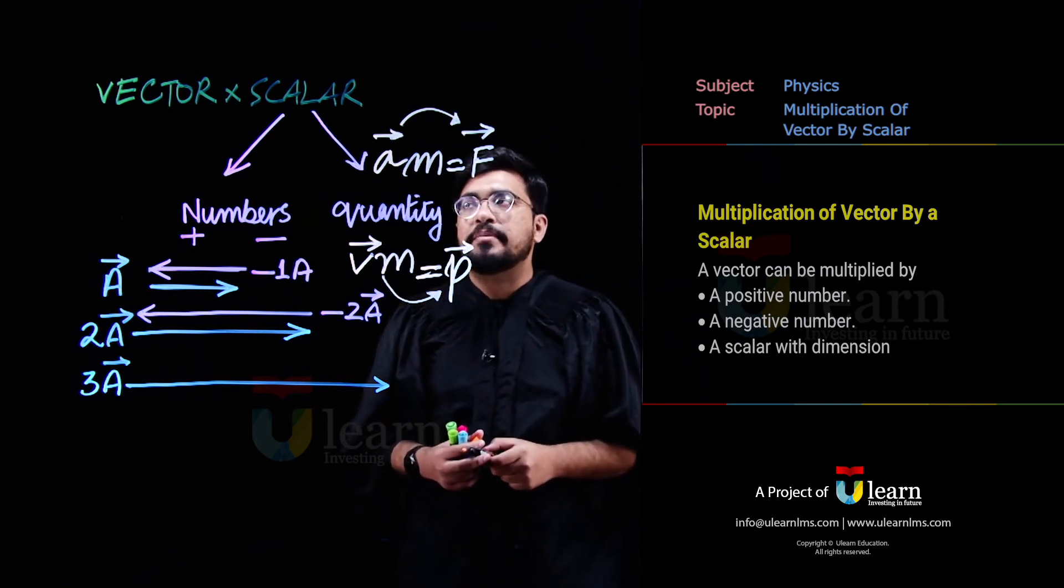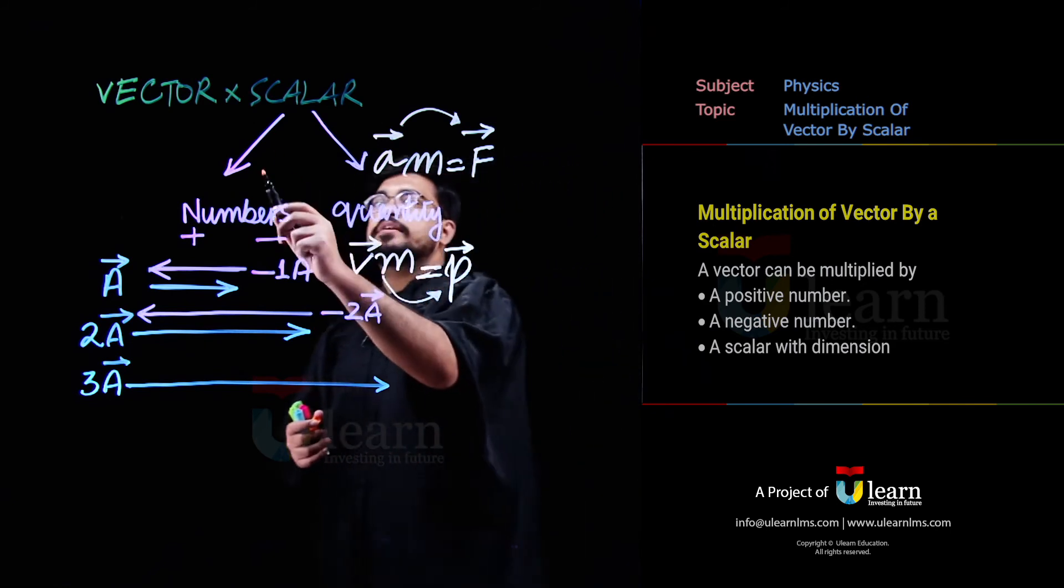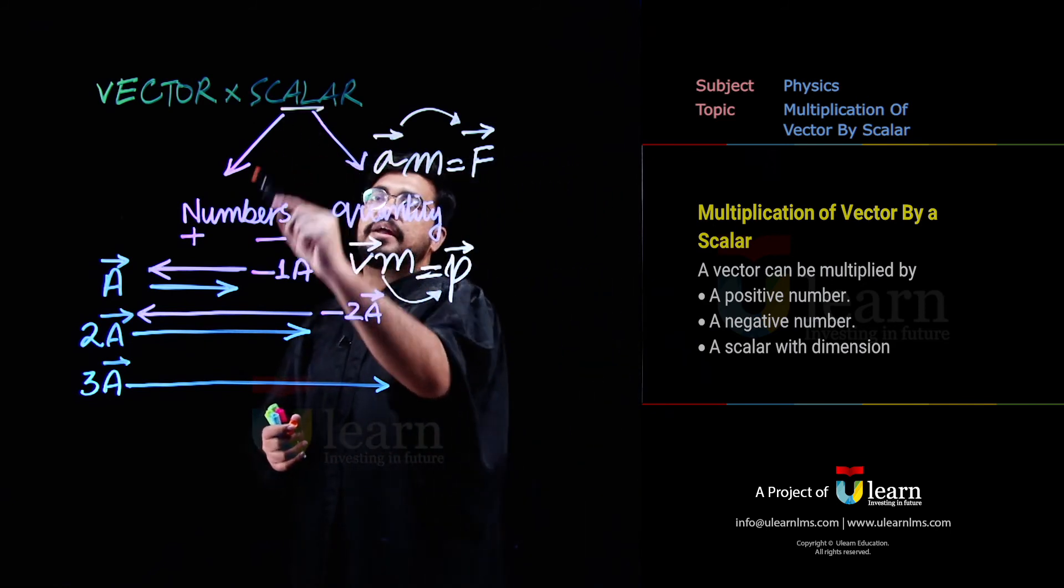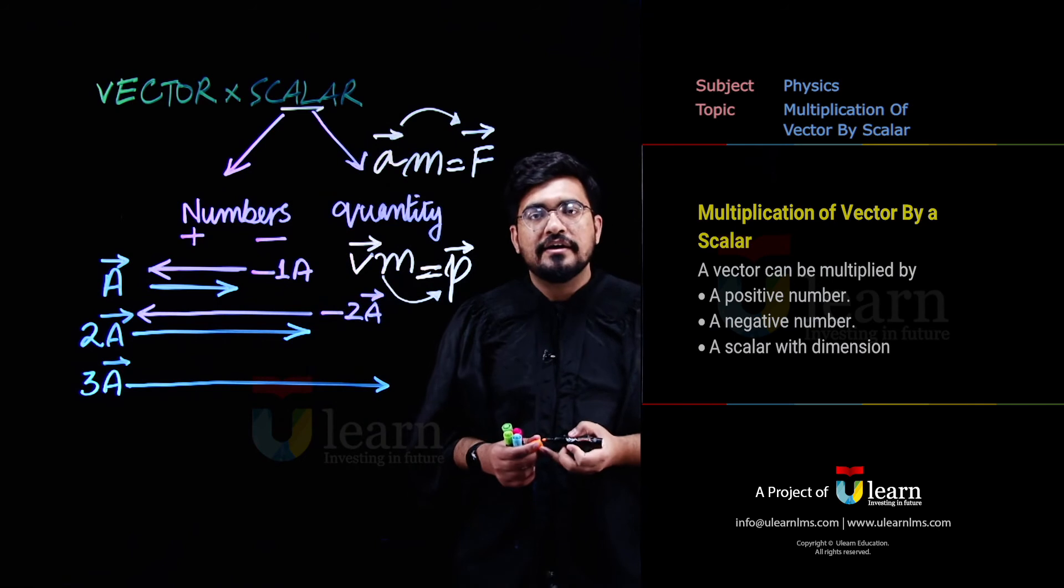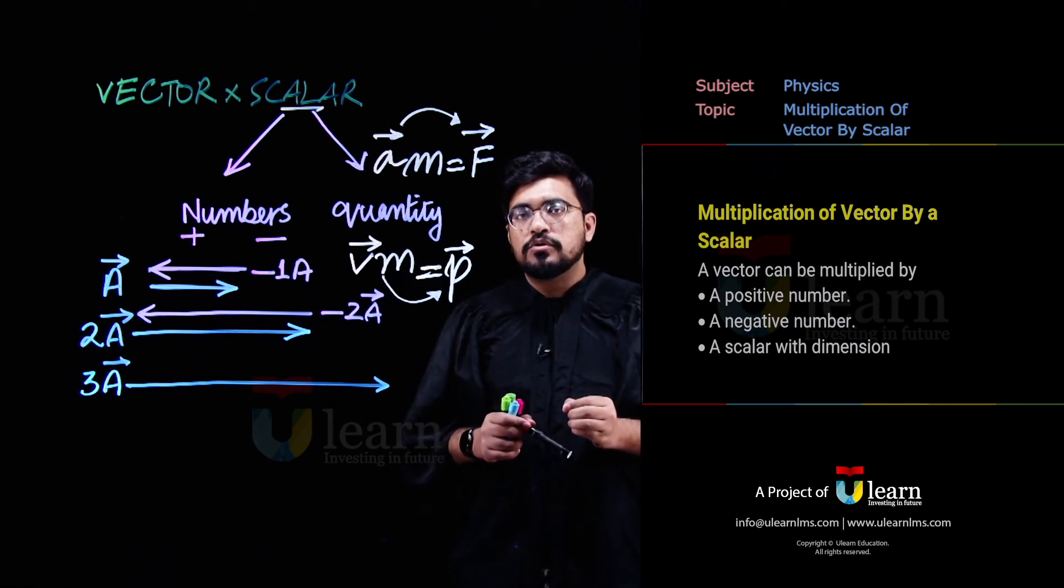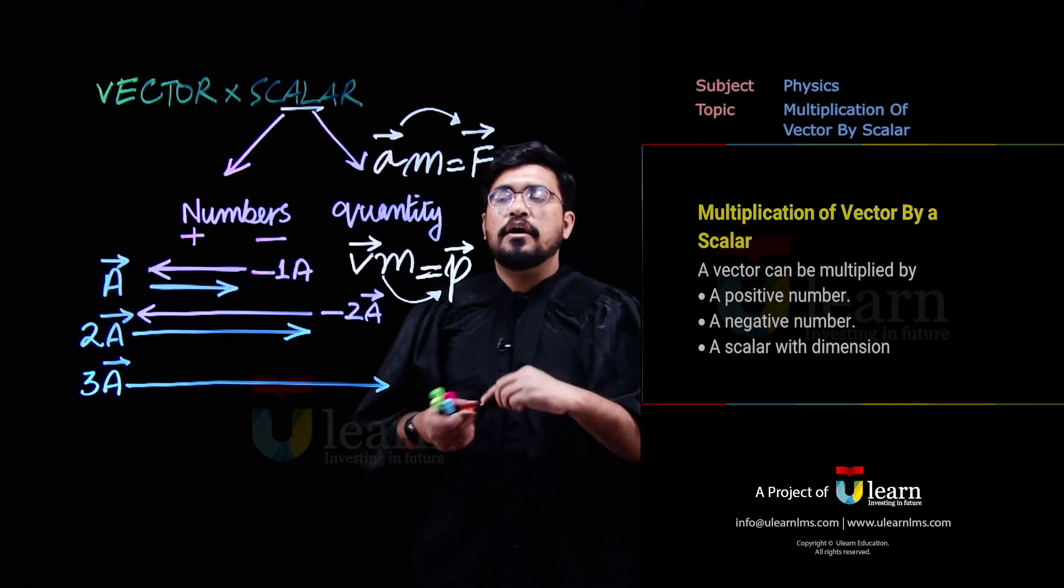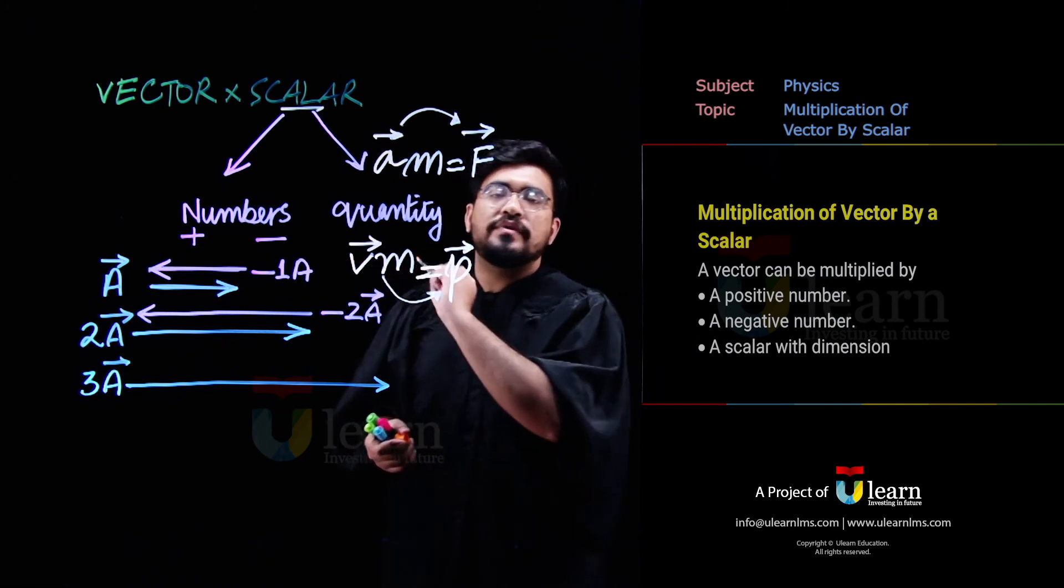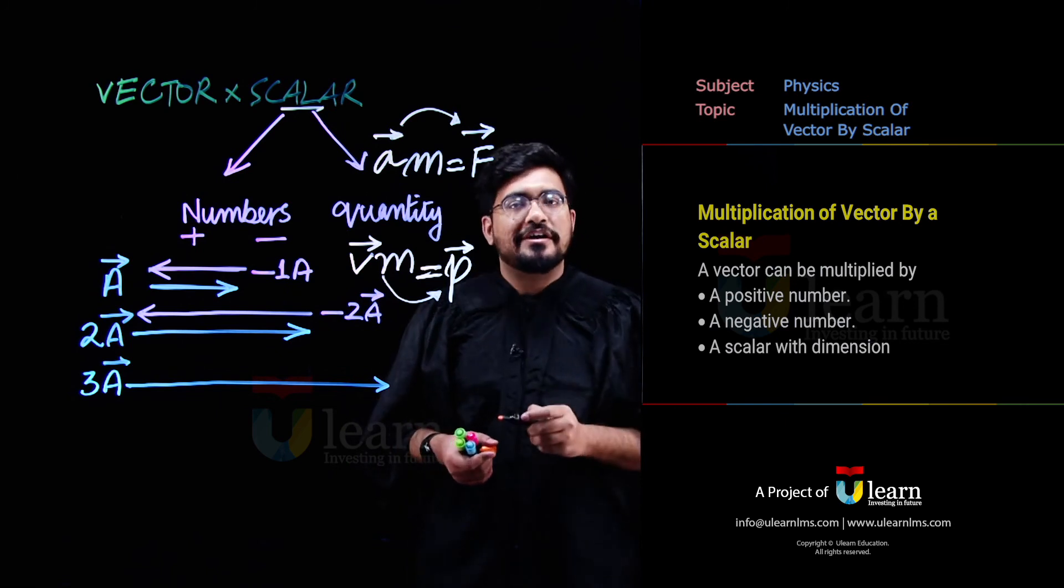Toh yahaan se, phir agar dusri baat karein, ki jab aap ek vector ko ek scalar quantity se multiply kar rahe ho, toh hume pata chalta hai, ki woh quantity agar positive hai, direction same rahegi, momentum ki direction wo hi hai, jo velocity ki direction hai, lekin vector change ho jayega.